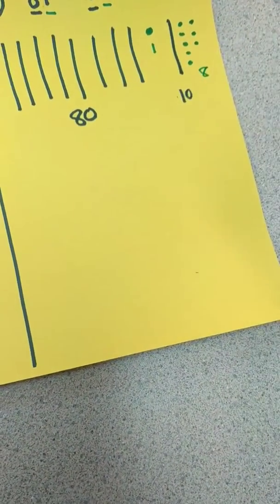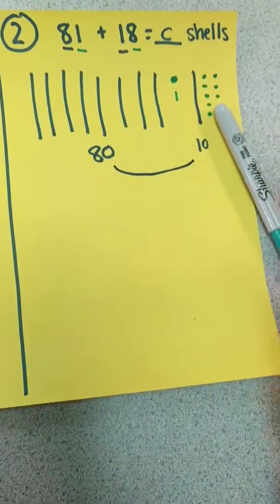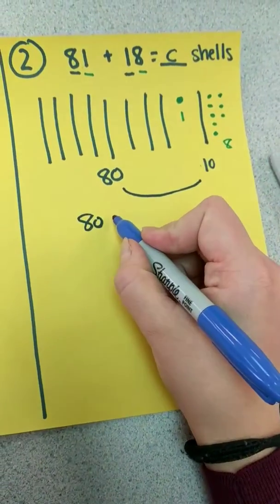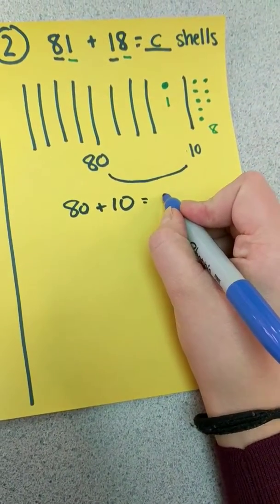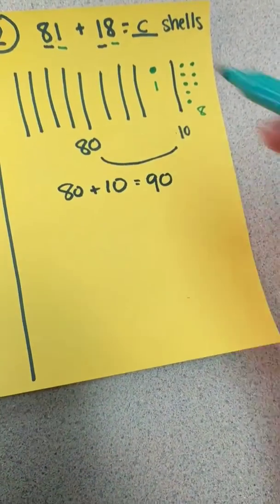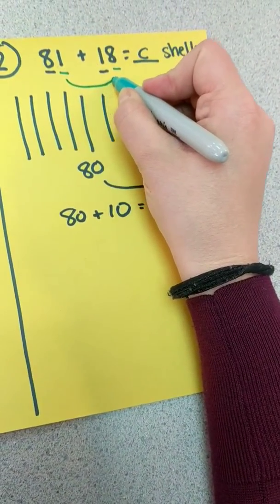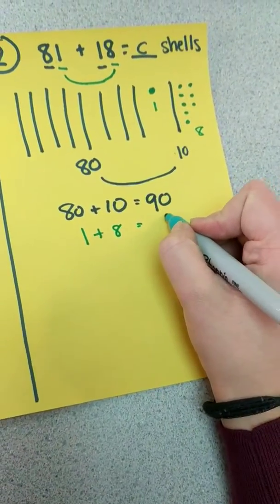And now we can do the place value method. You can draw a line if you want a smiley face. 80 plus 10 equals 90. Then I'll do my ones. One and eight. One plus eight equals nine.